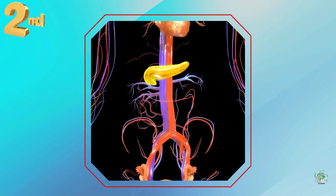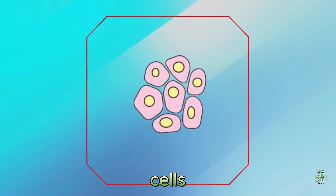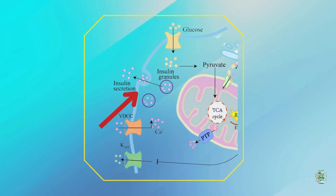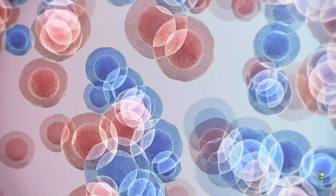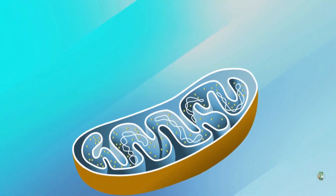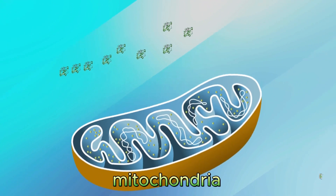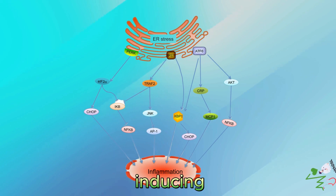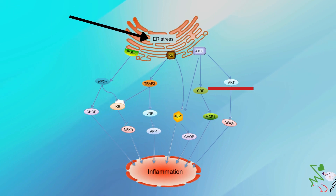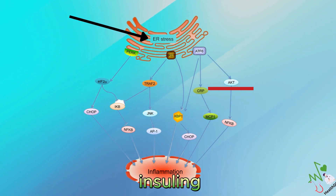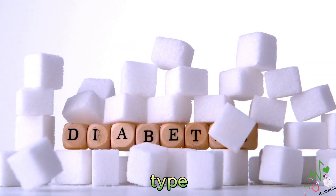Second, ceramides can also induce the death of pancreatic beta cells, which are the cells that produce and secrete insulin. Ceramides can trigger various mechanisms of cell death, such as activating the extrinsic apoptotic pathway, releasing cytochrome C from mitochondria, generating free radicals, inducing endoplasmic reticulum stress, and inhibiting AKT. This can reduce the amount of insulin available to regulate your blood sugar levels and cause type 1 and type 2 diabetes.